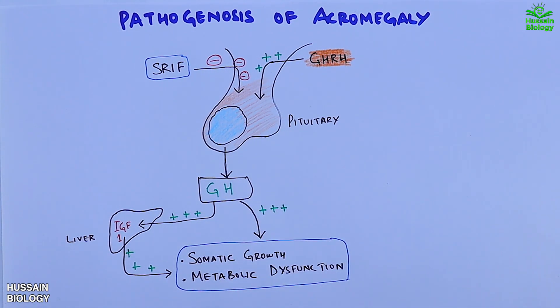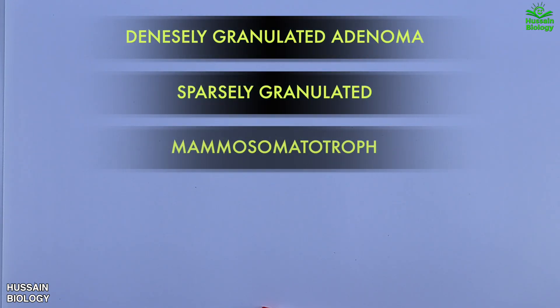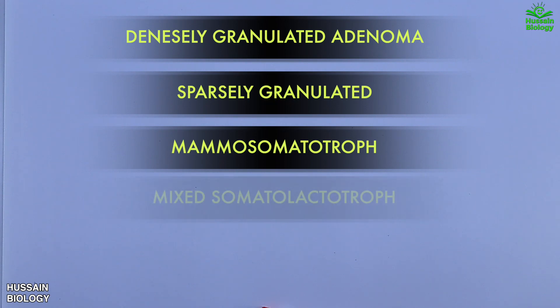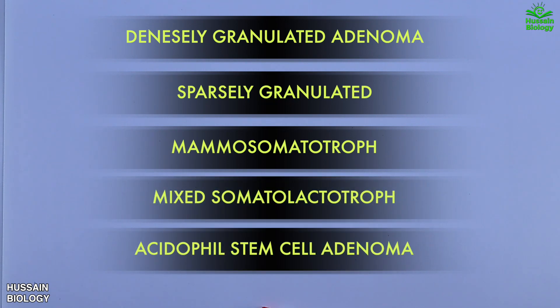The pituitary adenoma has subtypes: densely granulated, sparsely granulated, mammosomatotroph, mixed somatotroph-lactotroph, and acidophil stem cell adenoma.